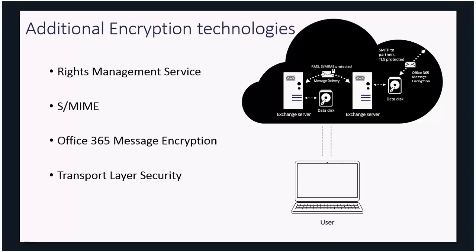Apart from defaults, there are additional encryption technologies available depending on your Office 365 plan. These include Information Rights Management, which gives you the ability to provide security around information outside the organization. When you send information to other people, you can use IRM to control what they can do with it — maybe they can read it but can't print, copy, or forward it. Implementing that on-premise is very challenging; in the cloud it's built in and just a matter of enabling it.